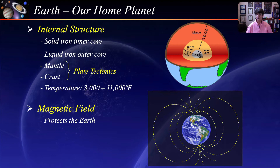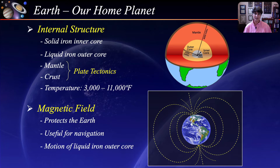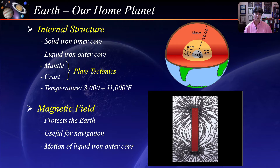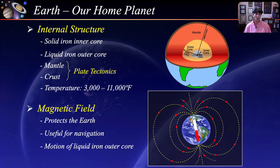Earth has a magnetic field that protects it from charged solar wind particles and is useful for navigation, as the magnetic poles are very close to the geographic poles. It is generated by the motion of molten iron alloys in the Earth's outer core. The magnetic field produced is as if there were a huge bar magnet inside the Earth. The field is strongest at the poles and weaker where the field lines are far apart. The field lines come out of the south pole and go into the north pole.